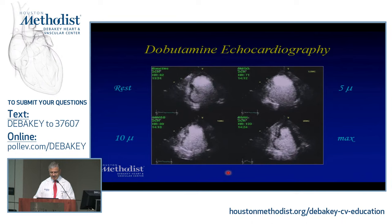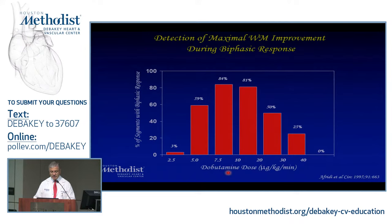You can see a depressed myocardium with some improvement in function after stress. It's interesting that there is not a single dose that will give you the maximal improvement in contractility. Usually these are at lower doses — 7.5 or 10 micrograms — and even at times you may start having some decrement in function at 10 micrograms because the reserve may not be that high.